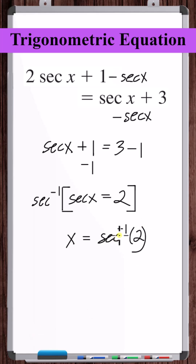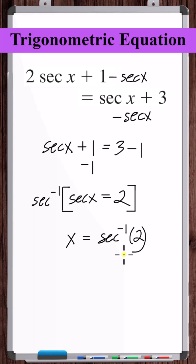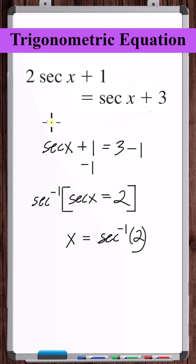Inverse secant is a function with one output. However, in a similar way to solving an equation with a square root, we have to think about the bigger picture — we have to ask: what are all of the possible angles that, when you take their secant, you get 2? Because all of those angles, when plugged into the original equation, are going to be solutions. That's what we're trying to find: all values of x that solve the equation.